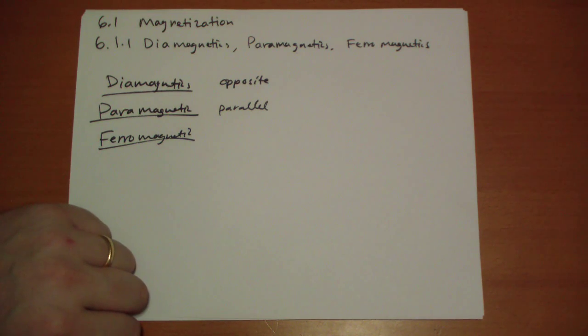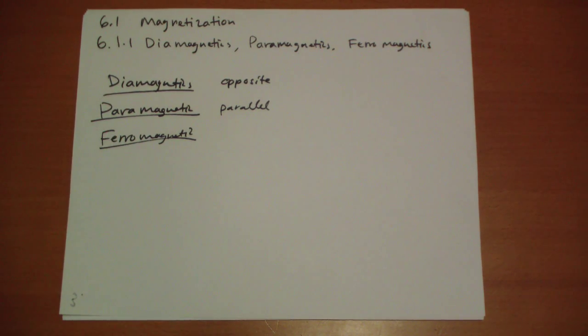So unlike electric polarization, the magnetic field is not always going to oppose whatever magnetic field you put it into, especially in the case of paramagnetics and ferromagnetics.